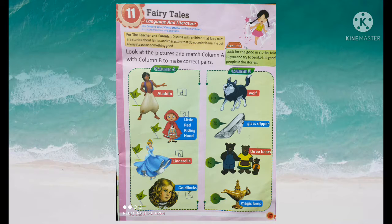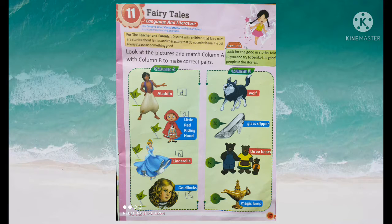Column A and Column B. You have to match Column A, which has fairy tale names, with Column B, which has the characters. Match the fairy tales with the characters. Look at the pictures and match Column A with Column B to make correct pairs.